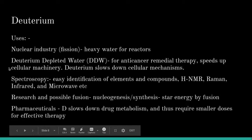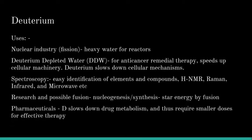So what are the uses of deuterium? It is found in the nuclear industry for fission. It is used as heavy water for reactors as a coolant. Deuterium-depleted water or DDW is used for anti-cancer remedial therapy. It speeds up cellular machinery. Deuterium in its form actually slows down cellular machinery, and if you have water depleted of deuterium, it speeds up cellular machinery.